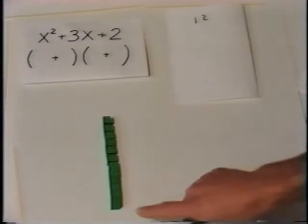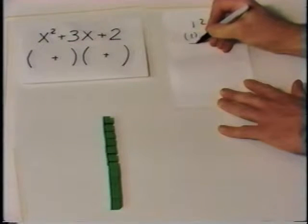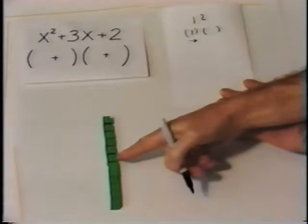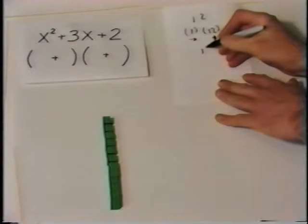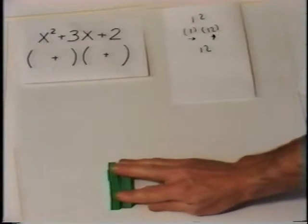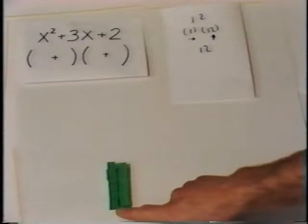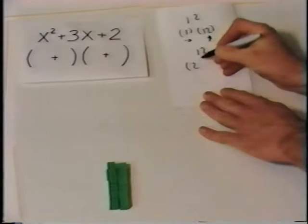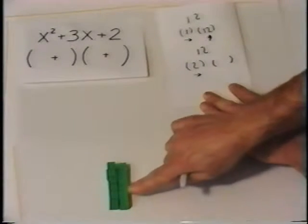Our factors of 12 here are our over distance 1 and up distance 12. Let's see if we can build a rectangle using 12 that is 2 wide. Here again, we factored 12. What are the factors of 12 now? The factors are distance over 2 and our distance up 6.